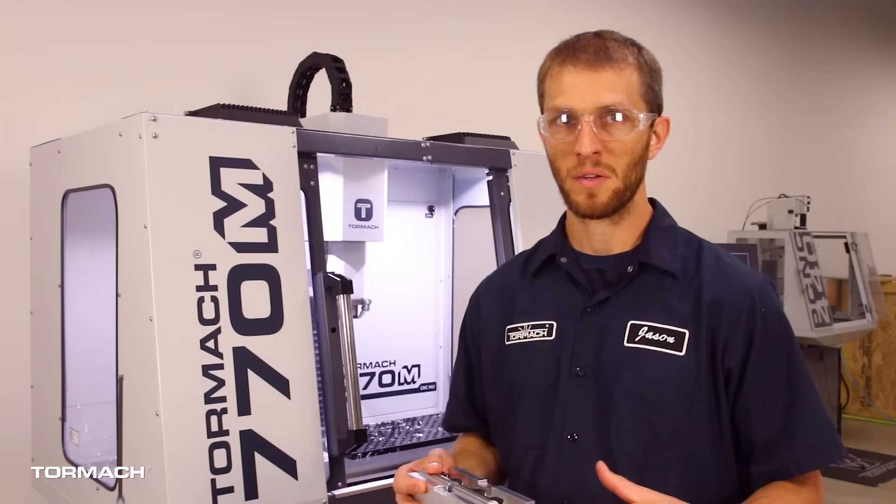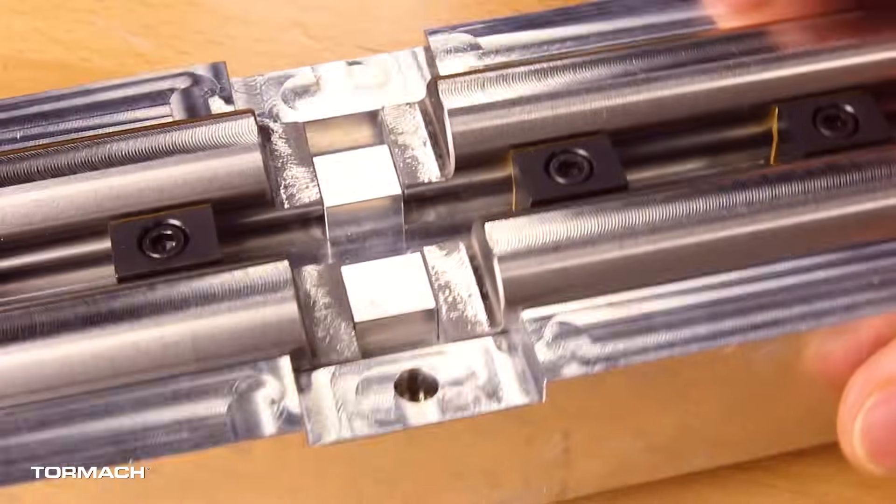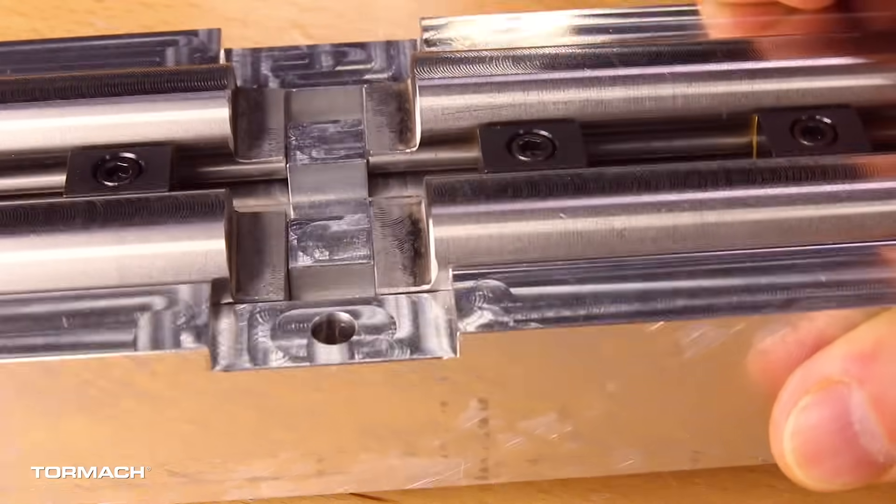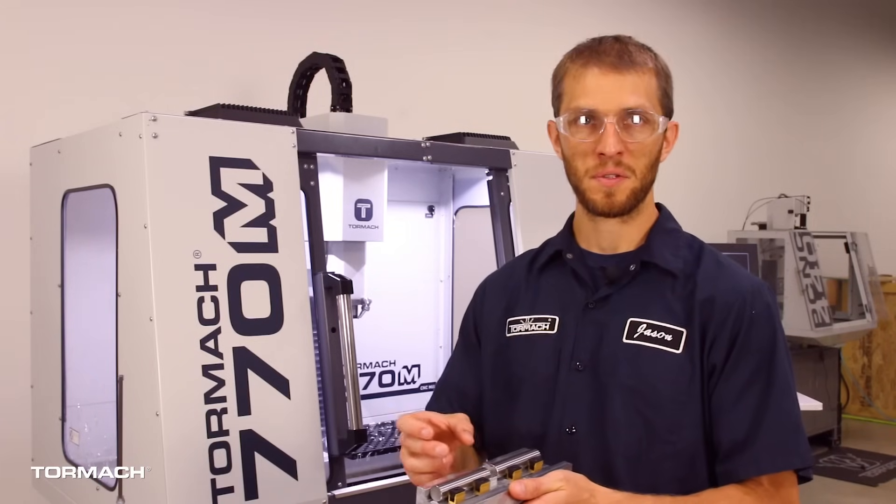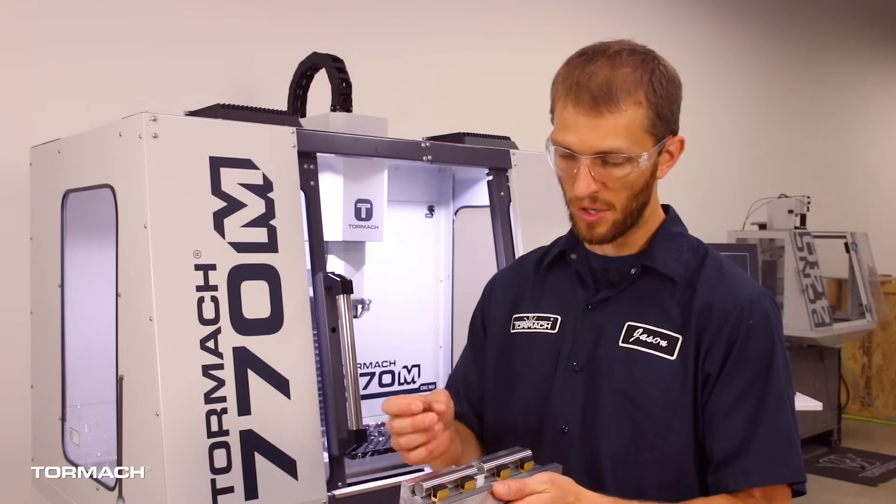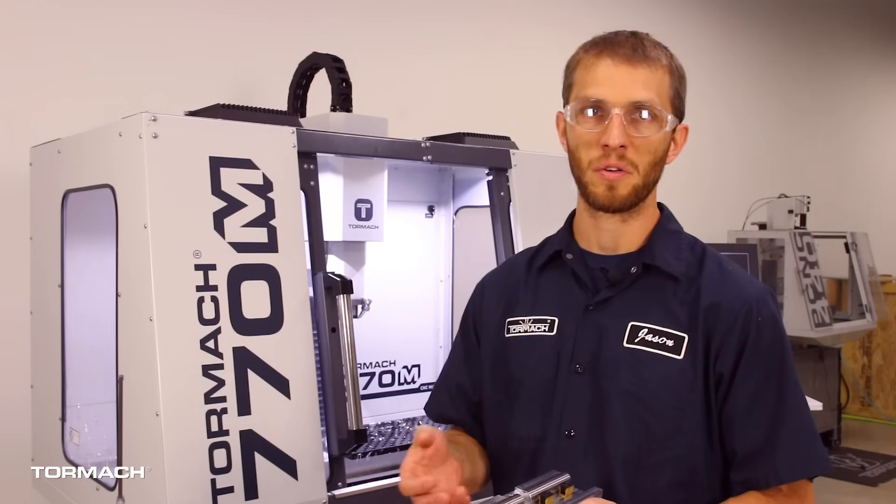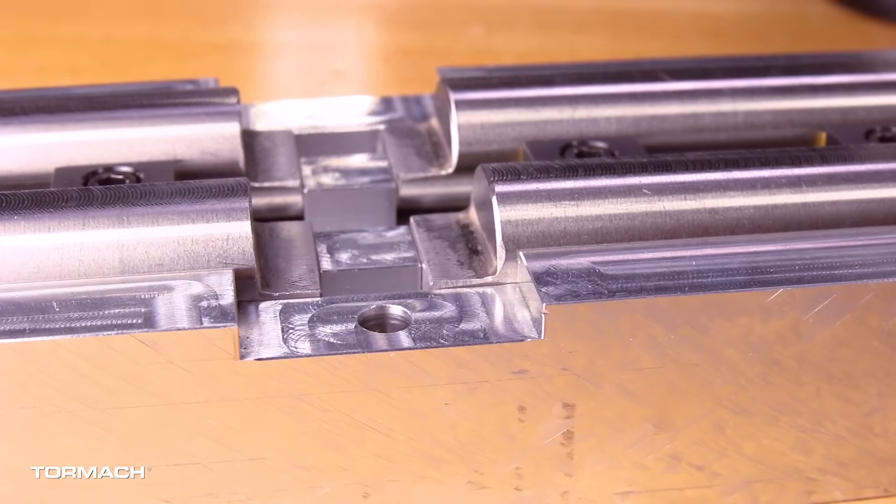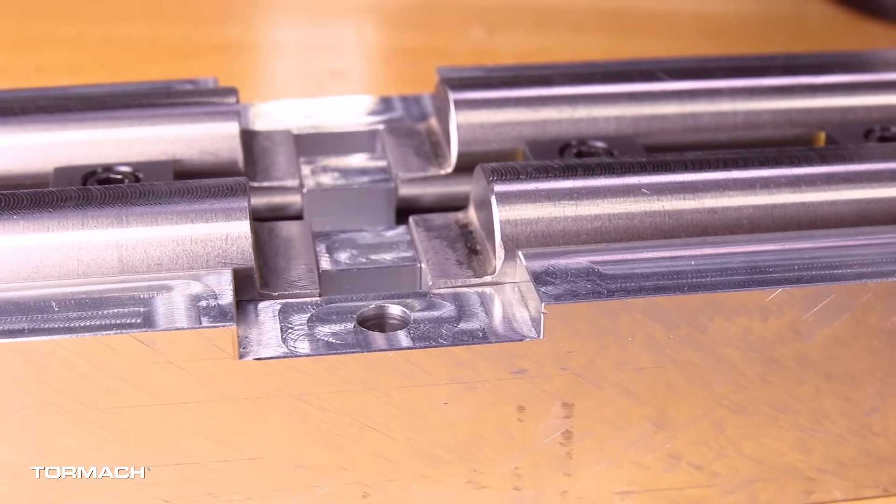Once I had this all modeled, I added some clearance pockets here for the notch itself. I just added about 50 thousandths clearance on the sides, on the width and the depth of the pocket, just for cutter clearance. And then I added a datum hole to make setup quick and easy.